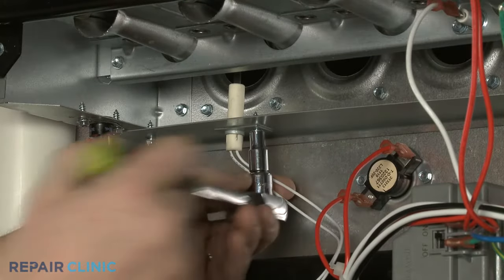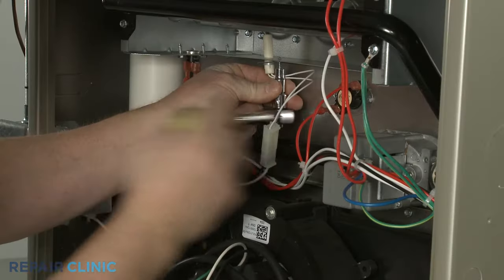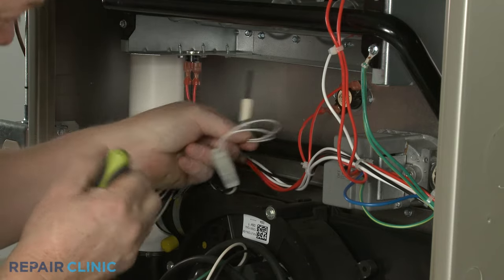The igniter is usually secured to a mounting bracket with a single screw. Disconnect the wire connector to fully remove the old component.